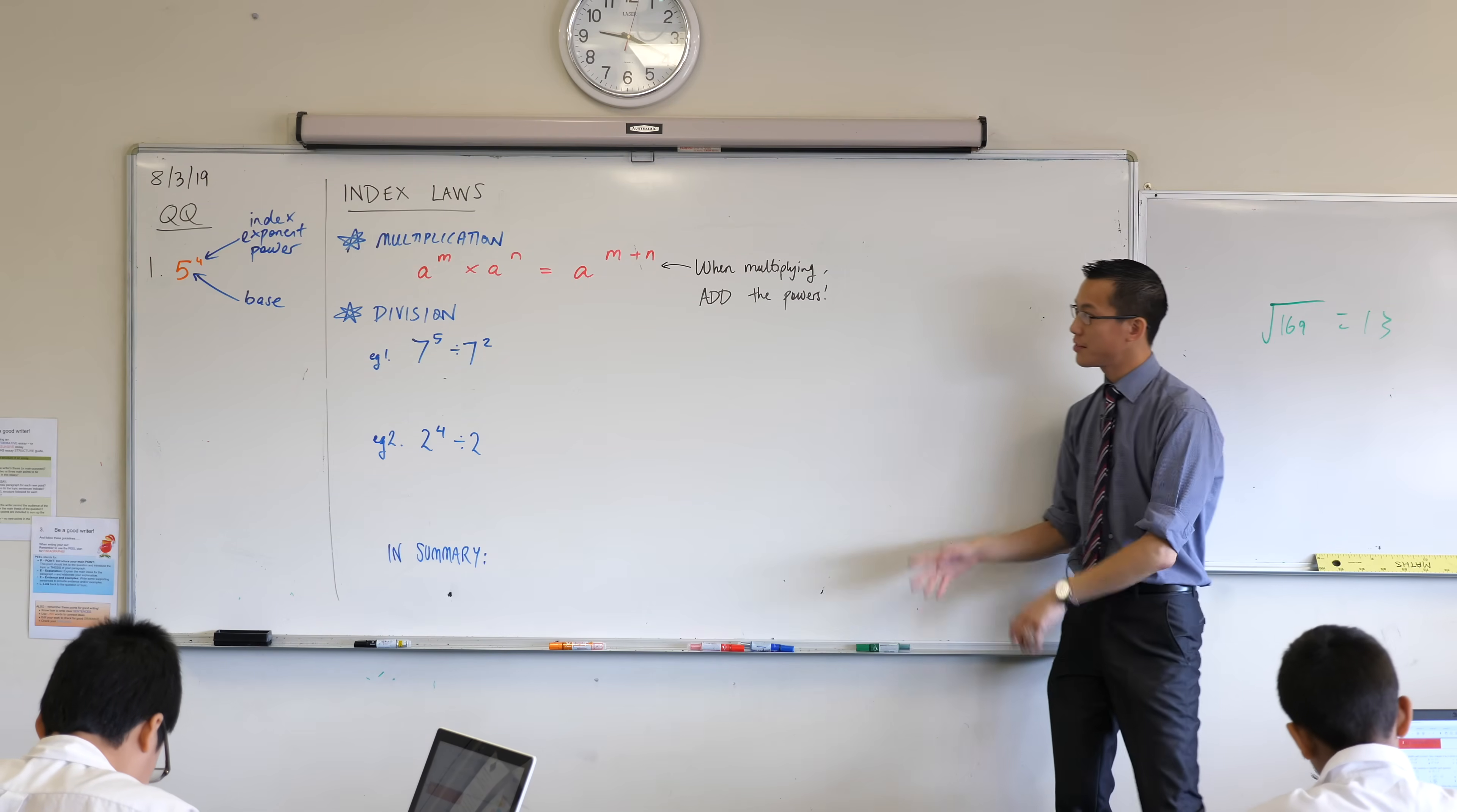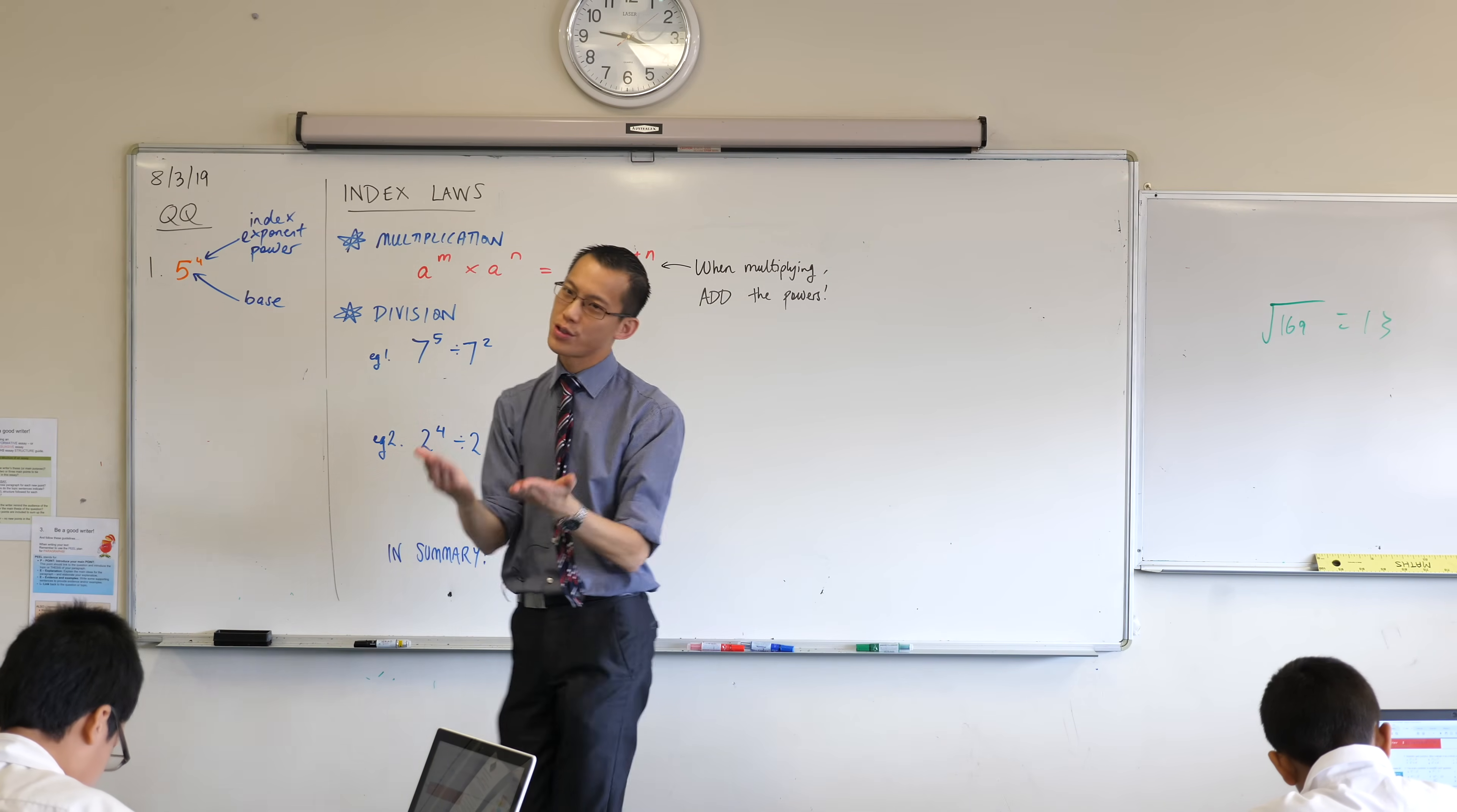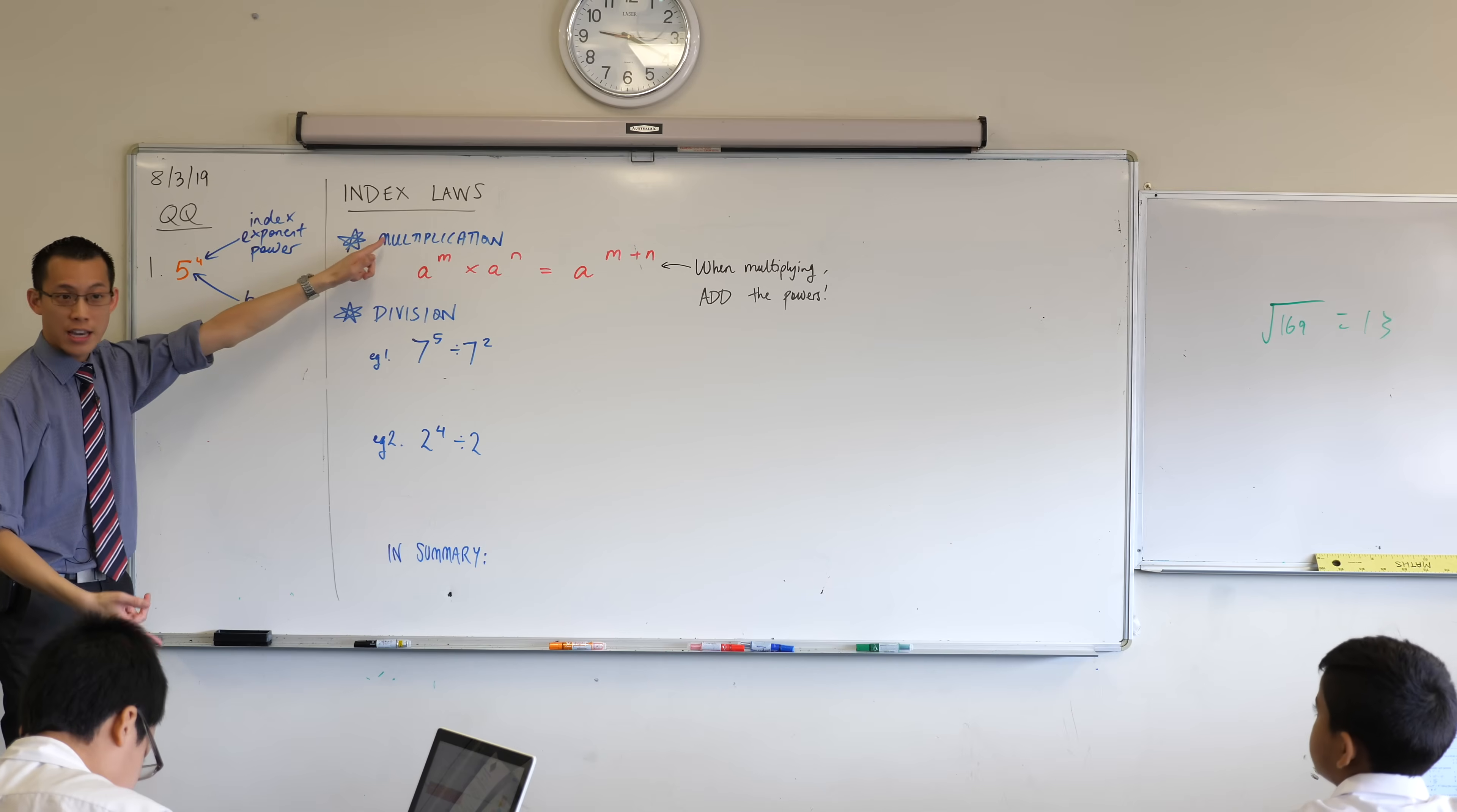Right, so we looked at multiplication, and division is a natural next place to go because multiplication and division are kind of two sides of the same coin. One does and the other one undoes. So when we think about division, a lot of what we thought about for multiplication will help.